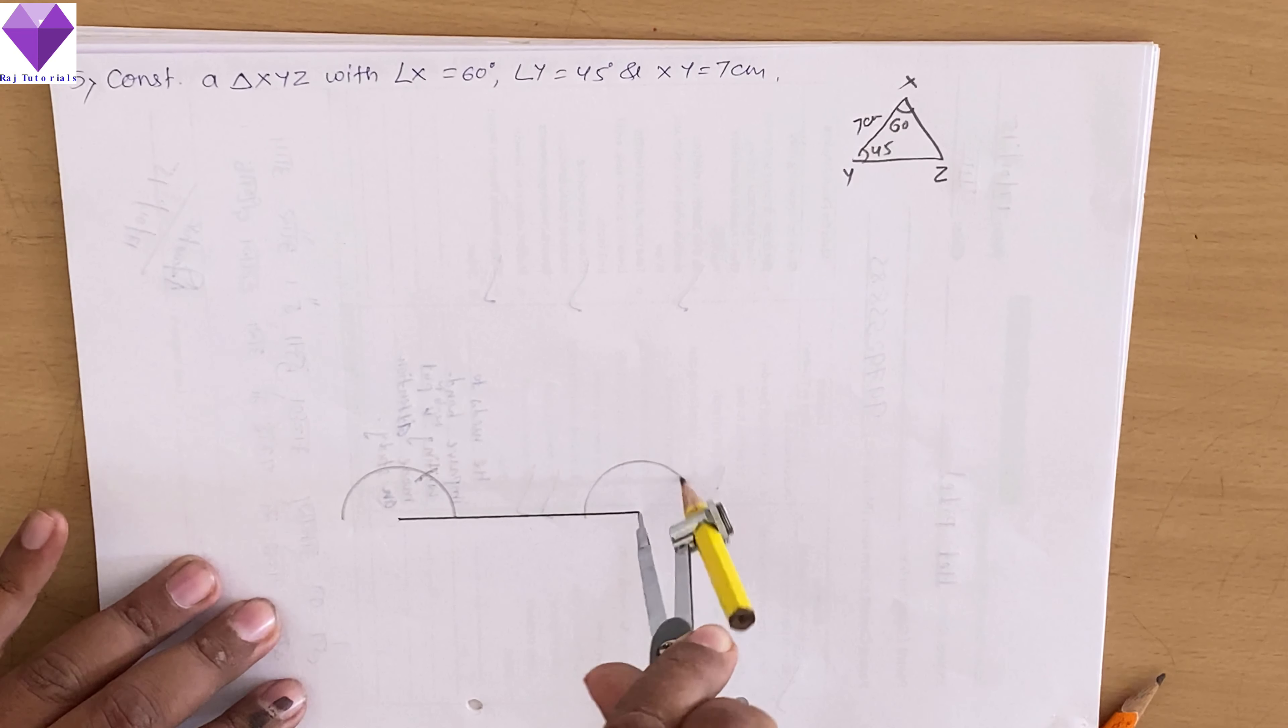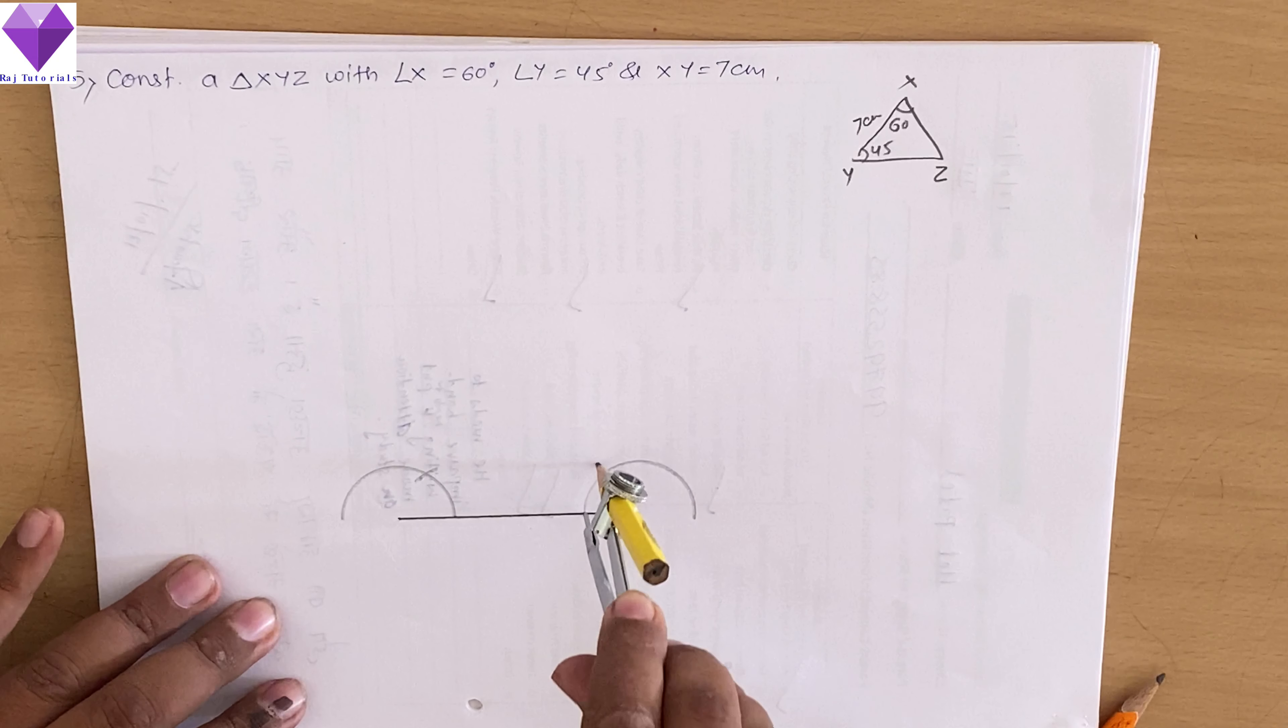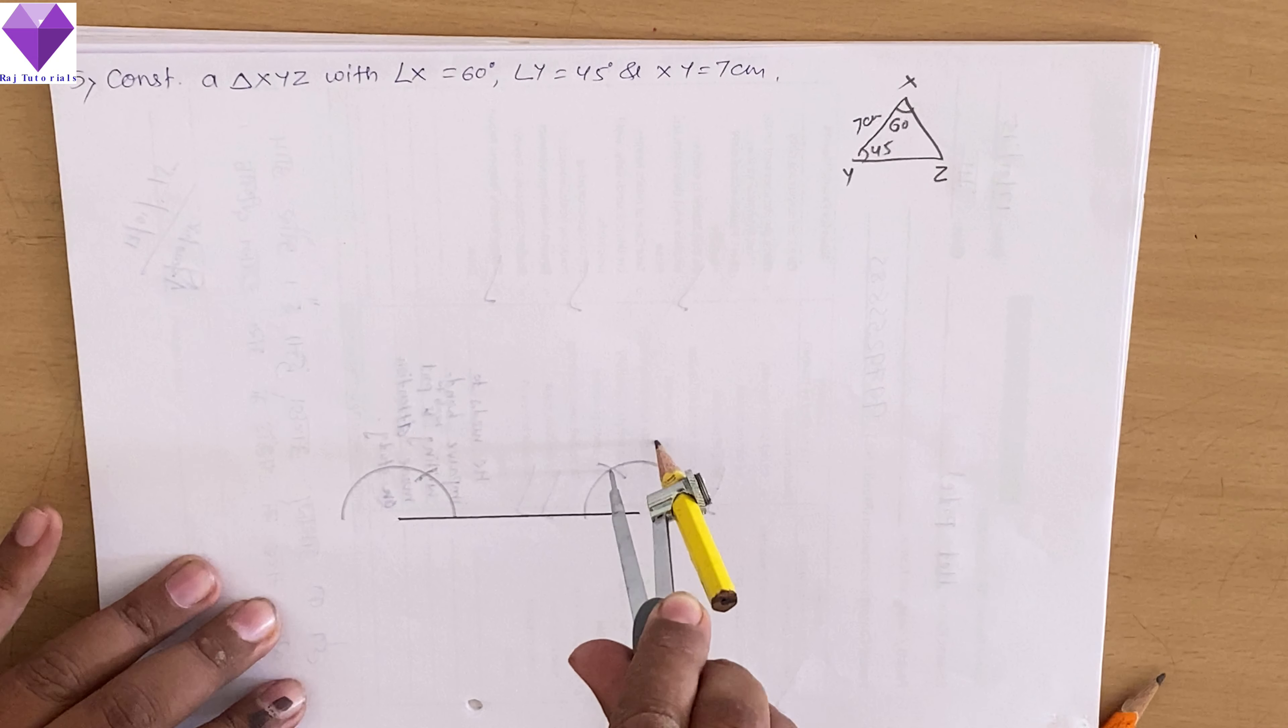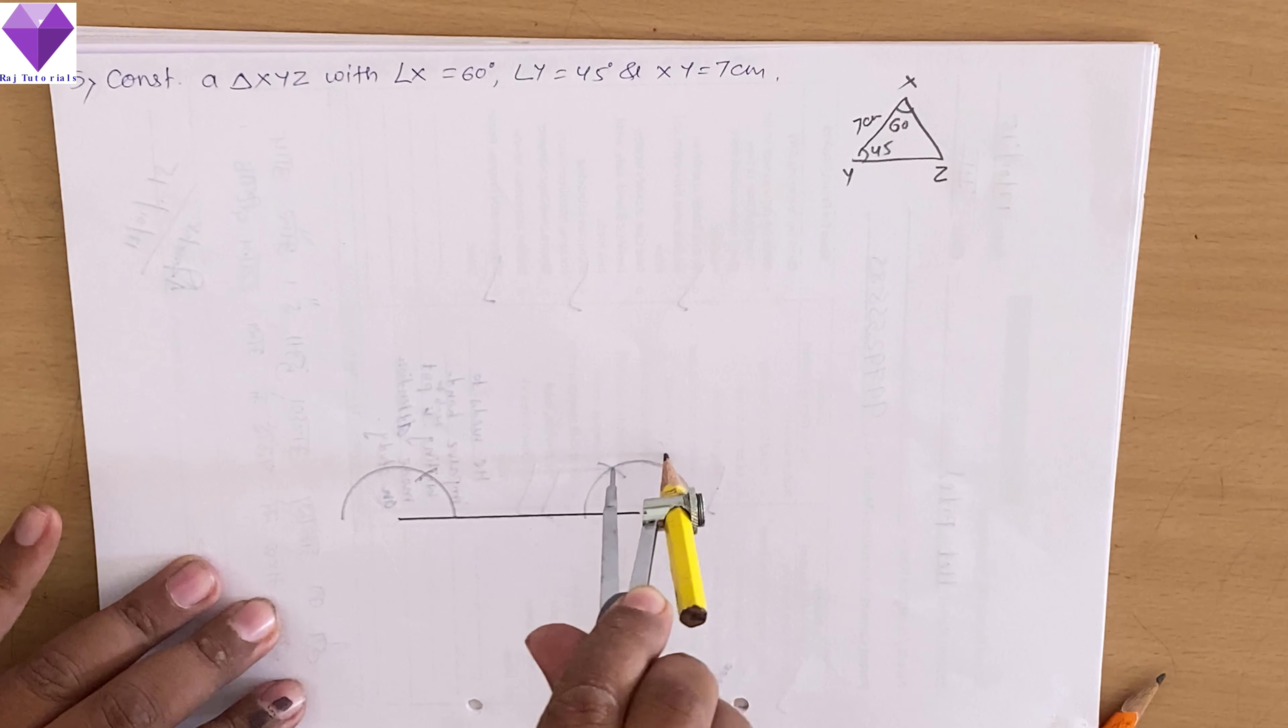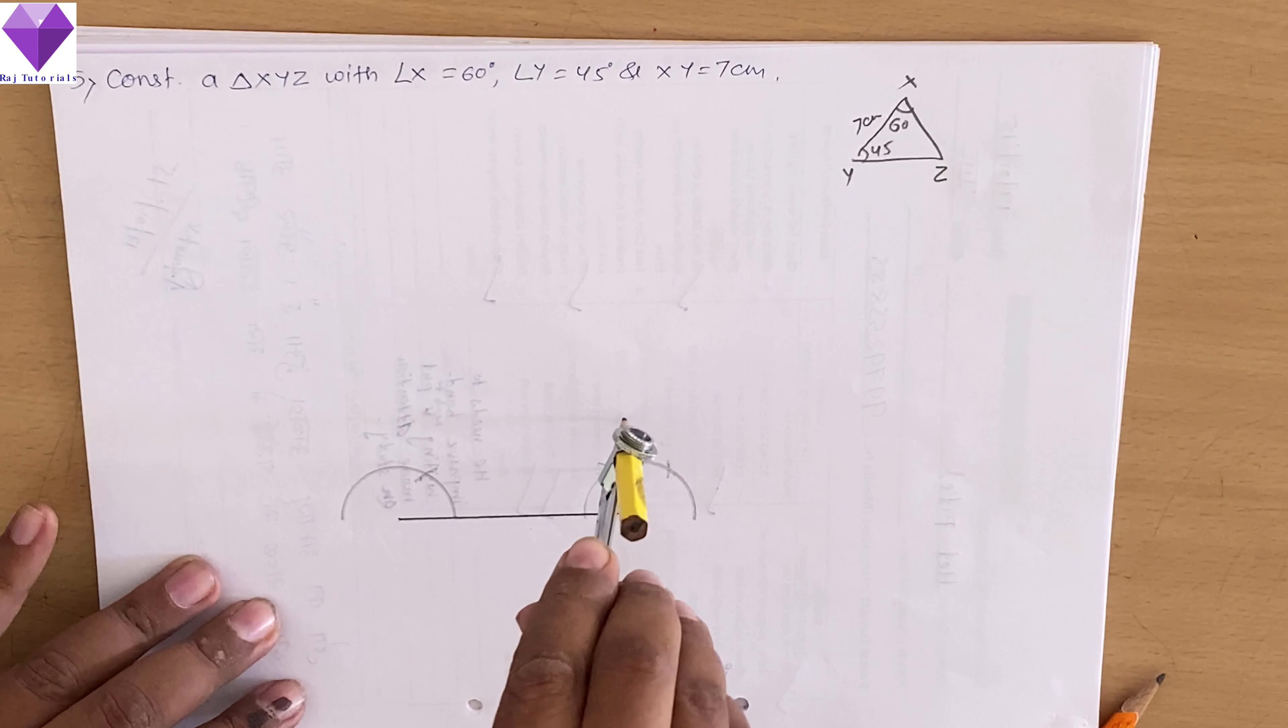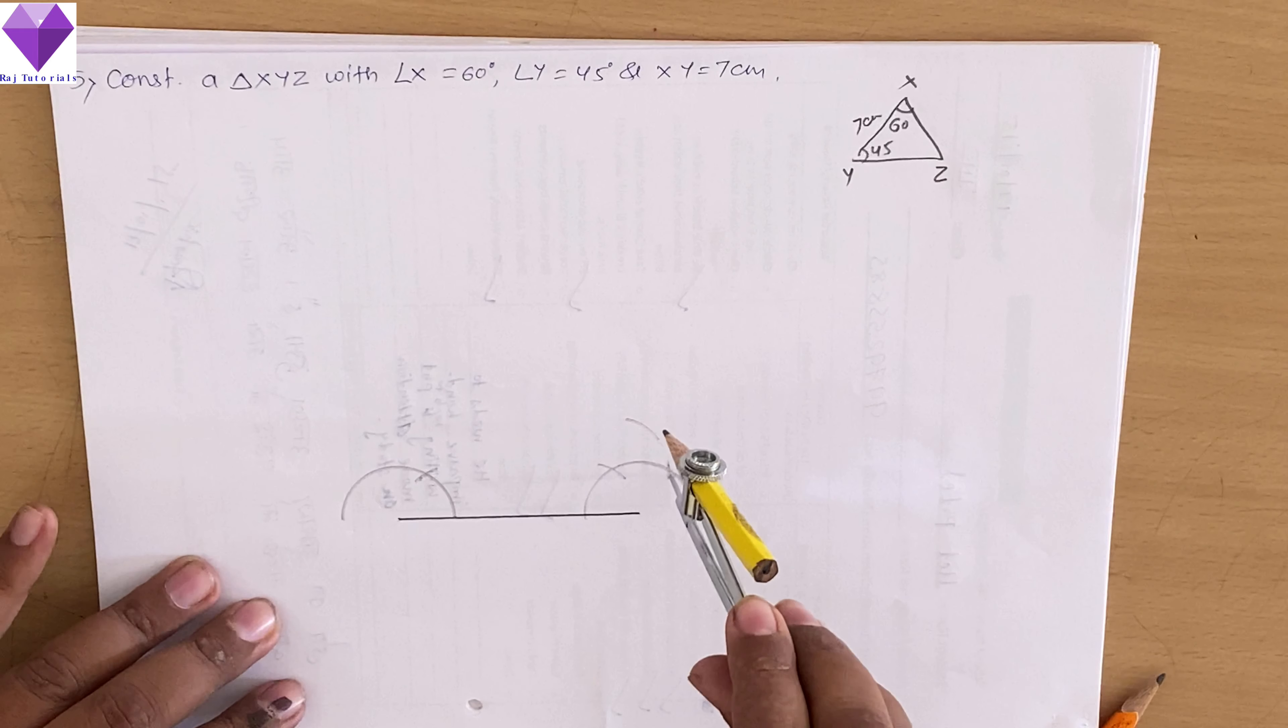Now to draw 45 degree I am taking any semi circle. I am giving 60 and 120 cut and now this two I have to cut first and get 90 degree. So I am making 90 degree R.